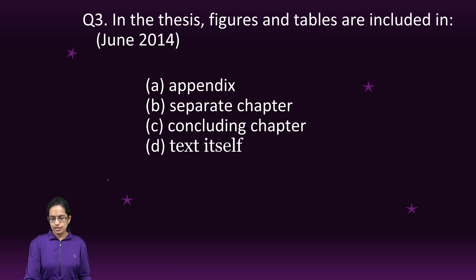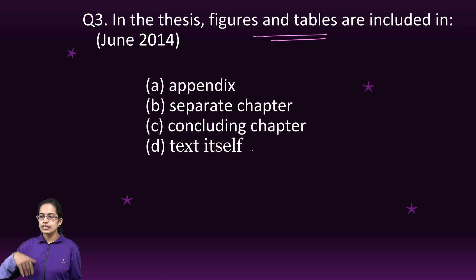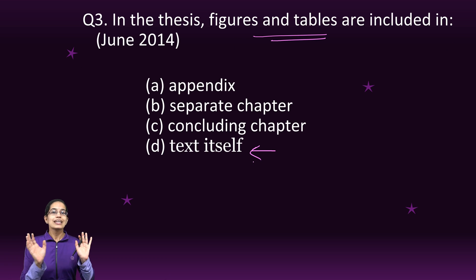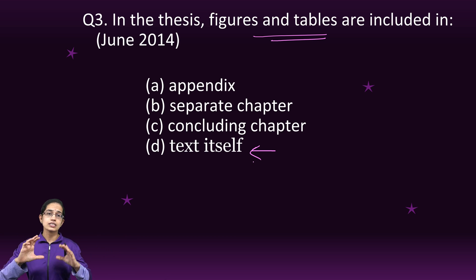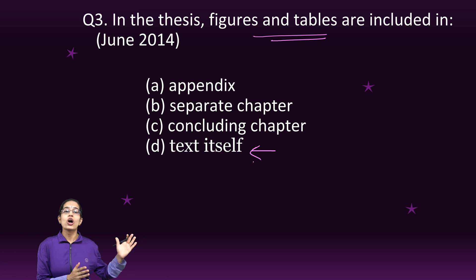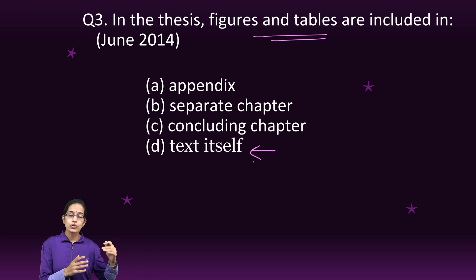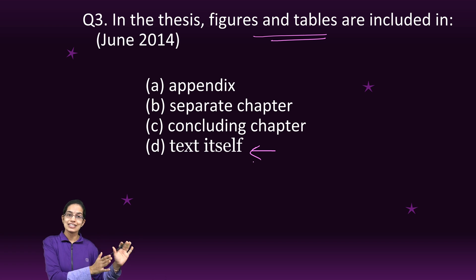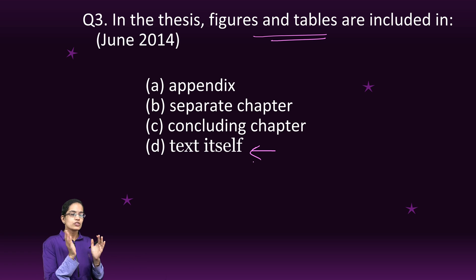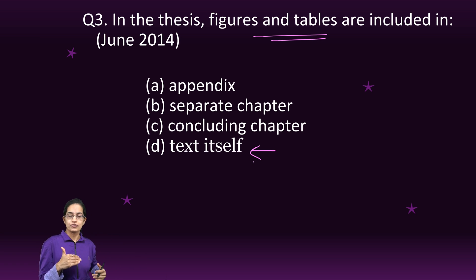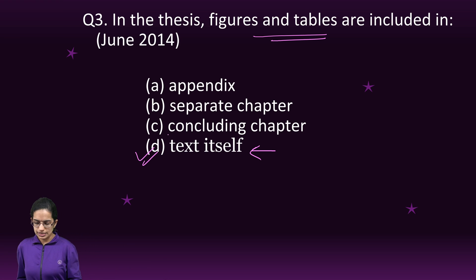The next question: in a thesis, figures and tables are included in the text itself — they are not kept separate. If you go through any thesis, you would have the figures, tables, and diagrams running with the text. It is not like an end note or a separate list of tables. You can find a list of tables and list of figures separately, but not the figures and tables themselves kept separate, as they maintain the flow of the text.